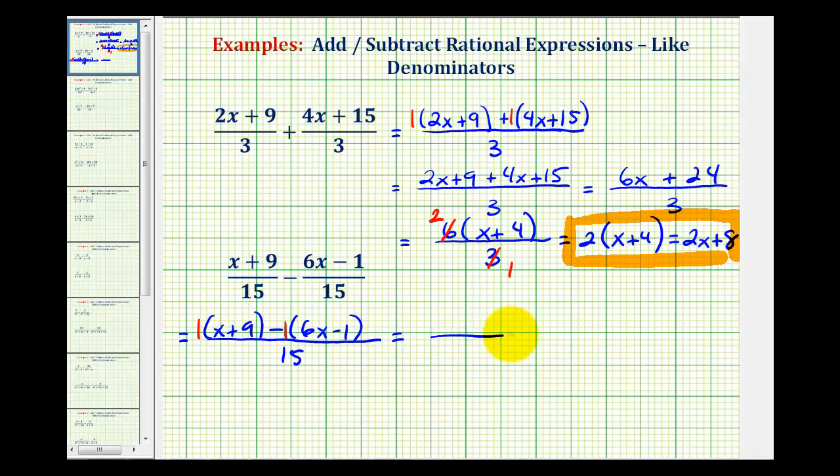So this would give us, again, a denominator of fifteen. And then here, we'd have x plus nine. And then here, when we distribute a negative one, we would have a negative six x, or a minus six x. And then negative one times negative one becomes plus one. Notice when subtracting this quantity, the sign of each term changes.